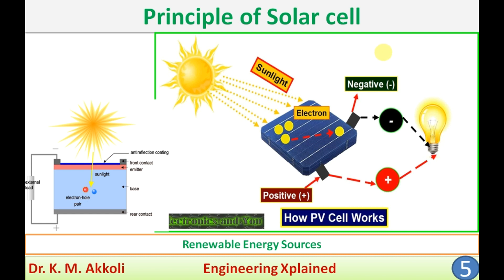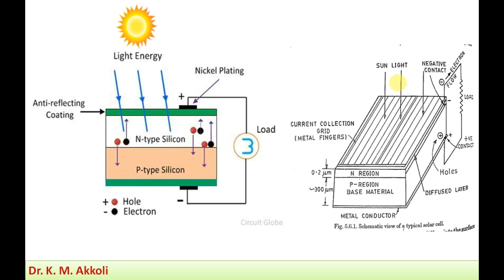In this session I will discuss how the conversion of solar energy into electricity takes place and how the PV cell works. A solar photovoltaic cell consists of two layers of semiconductor material — one layer is N-type silicon, or negatively charged silicon, and another layer is P-type silicon, or positively charged silicon. These two layers of semiconductor materials are connected together forming a NP junction.